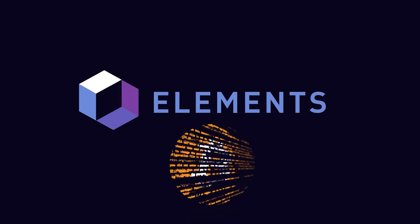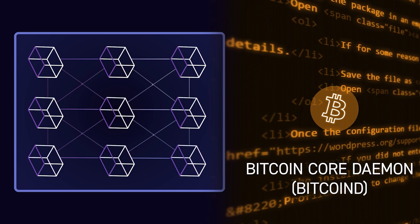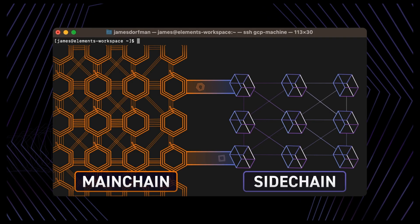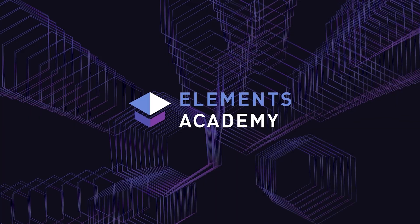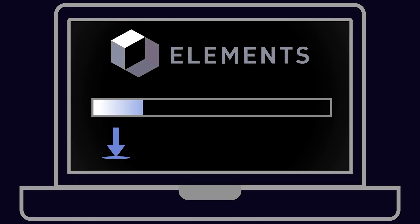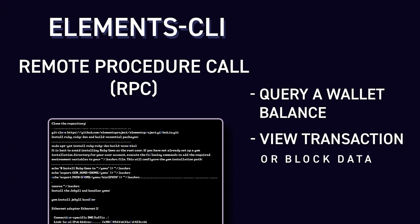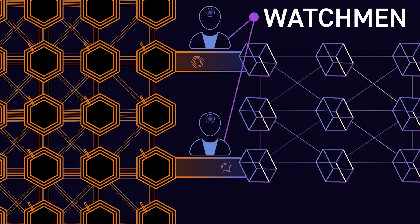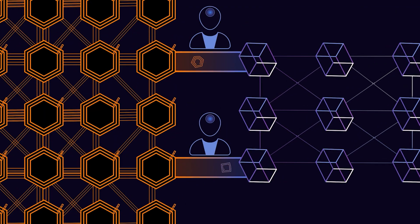It lets developers familiar with the Bitcoin D API quickly and cost-effectively create working blockchains. The purpose of Elements Academy is to introduce and explain the key concepts behind Elements. Elements is the open-source platform that the Liquid Network is built on.